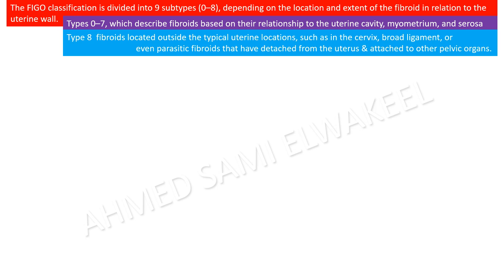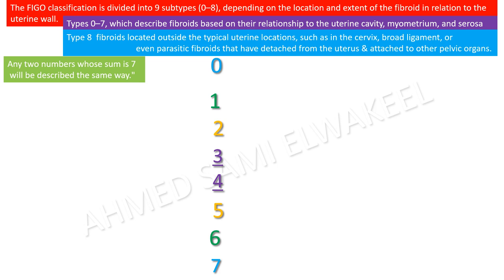Type eight fibroids are located outside the typical uterine locations, such as in the cervix, broad ligament, or even parasitic fibroids that have detached from the uterus and attached to other pelvic organs. To memorize subtypes zero to seven: subtypes zero, one, and two are submucosal; subtypes five, six, and seven are subserosal; and subtypes three and four are intramural.